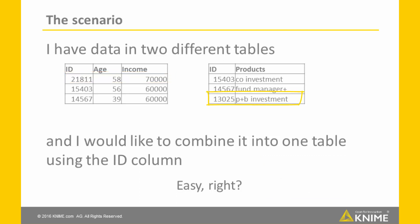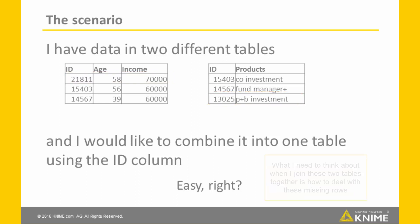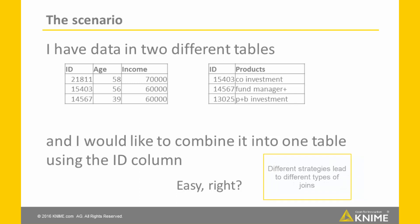And similarly, in the right table, the last row for customer 13025 is not present in the left-hand table. What I need to think about when I join these two tables together is how to deal with these missing rows. Different strategies lead to different types of joins.